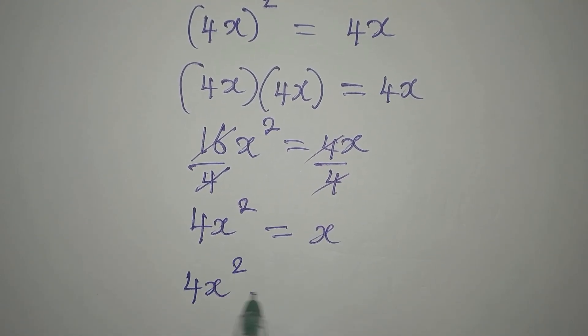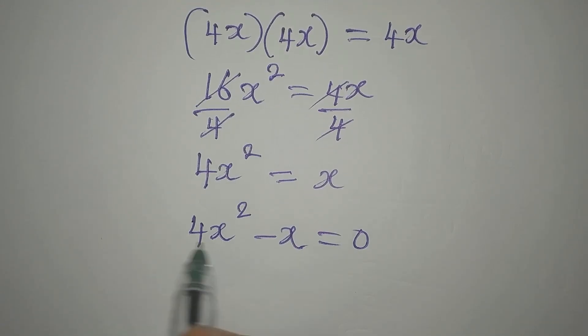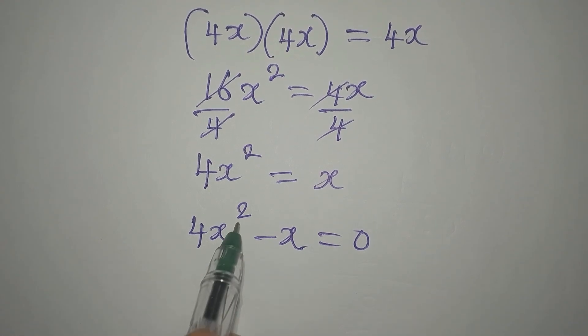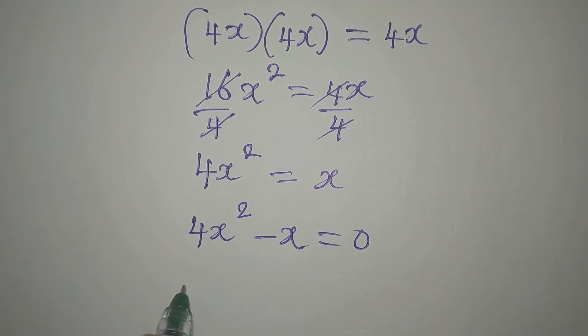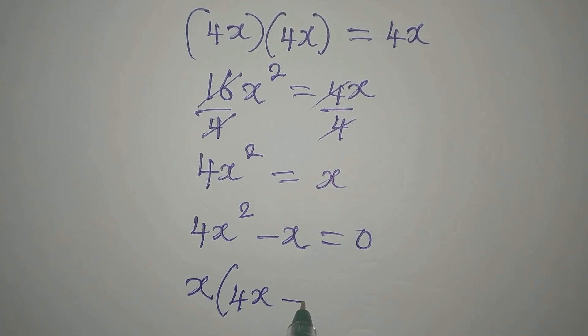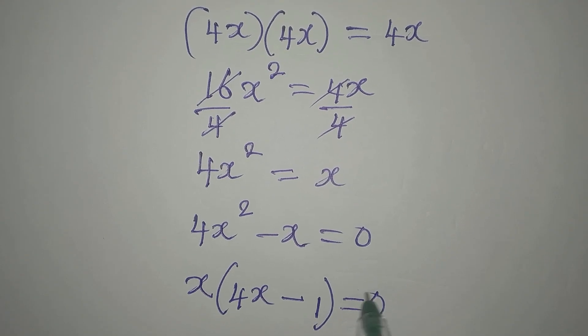Now take x to the left side, so we have 4x² - x = 0. This is a quadratic equation with highest power 2, so we can factorize. We have x(4x - 1) = 0.